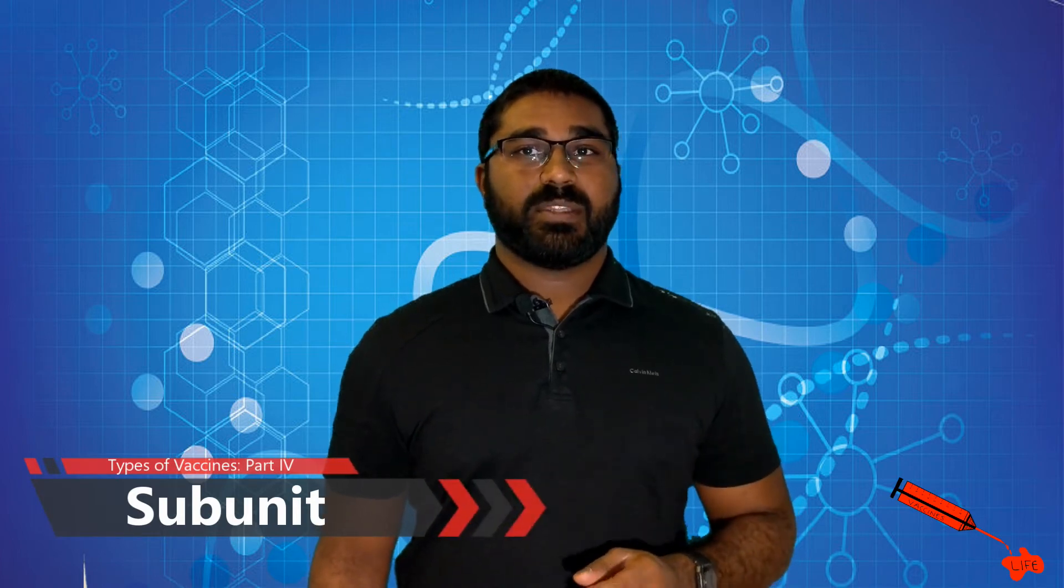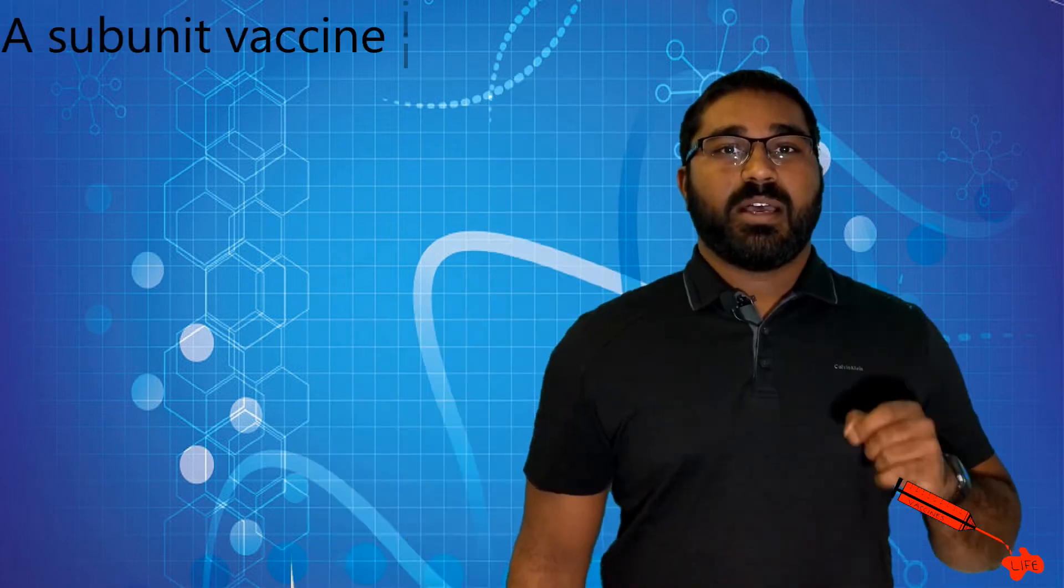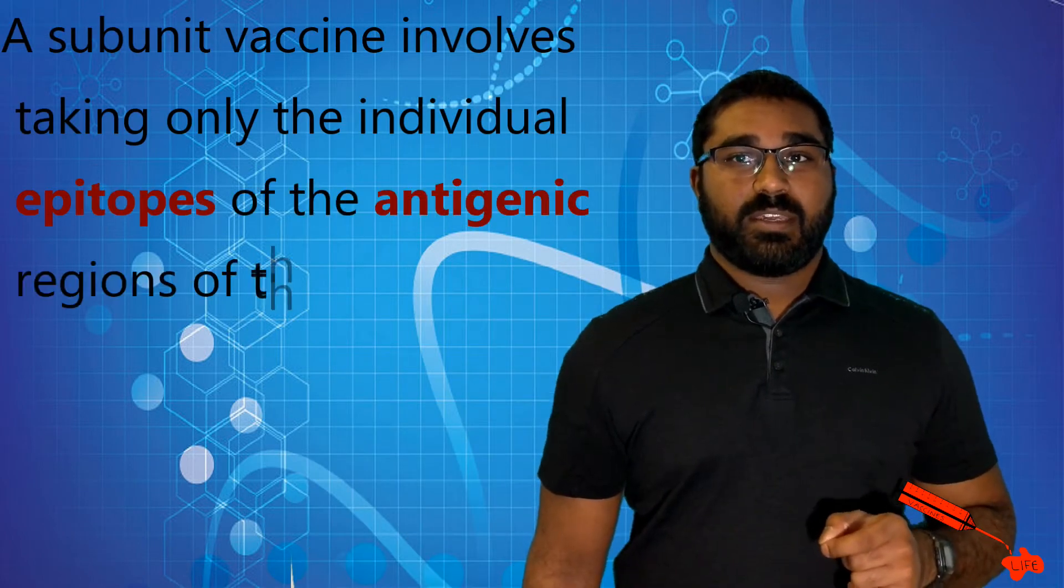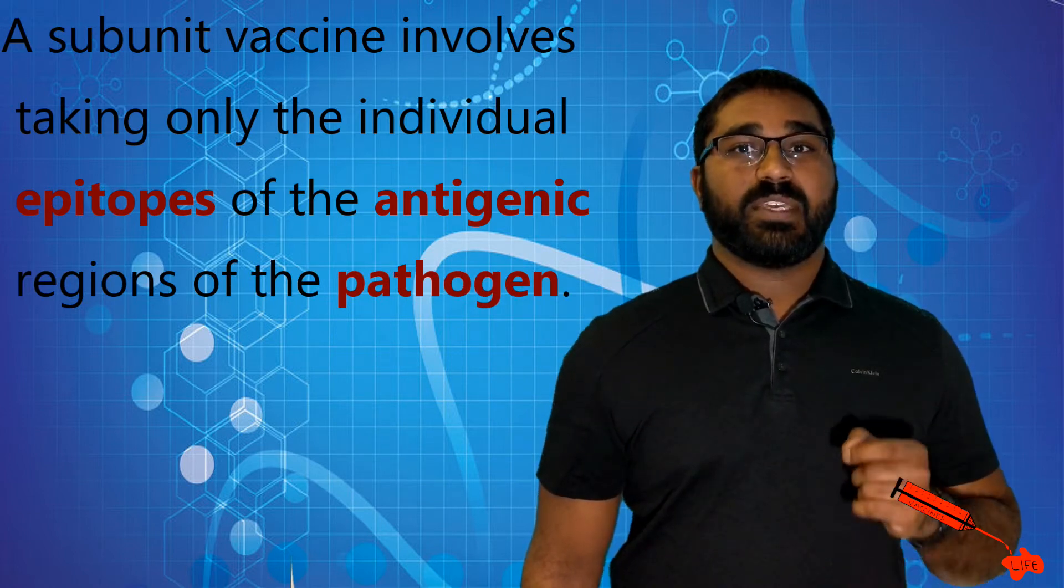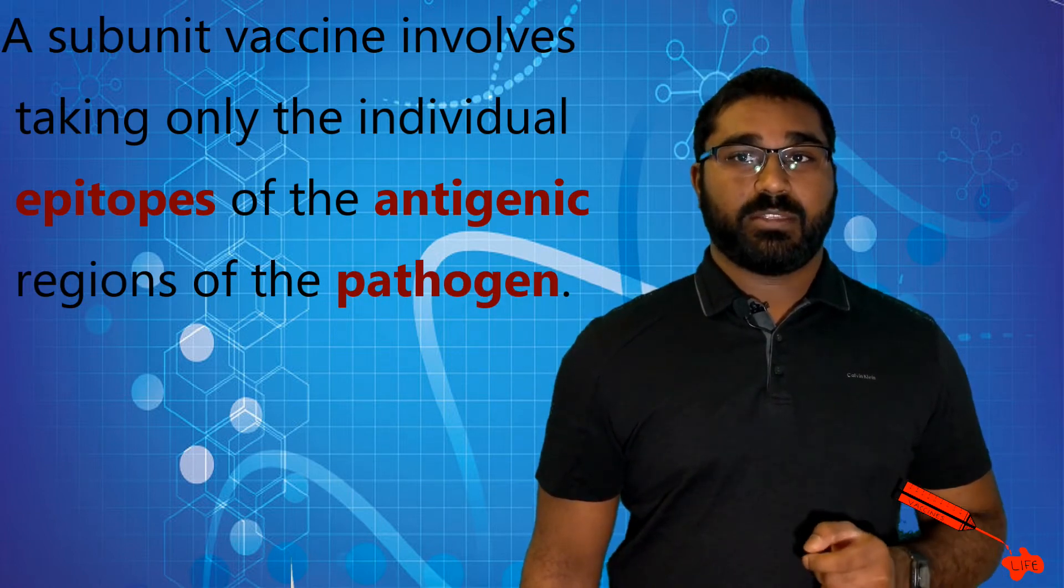So this class of vaccine is probably the second most complicated type. We'll be talking about the most complicated vaccine class in the next video. A subunit vaccine involves taking only the individual epitopes of the antigenic regions of the pathogen.